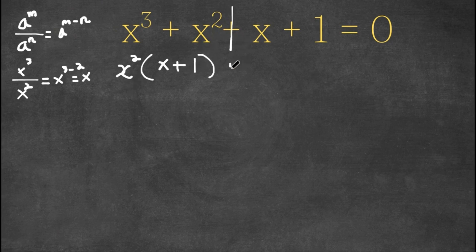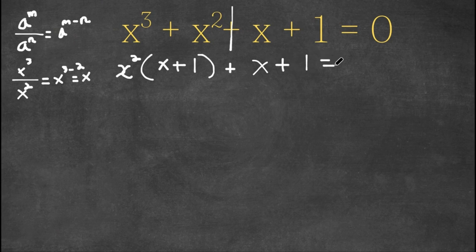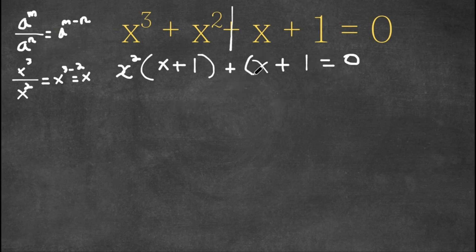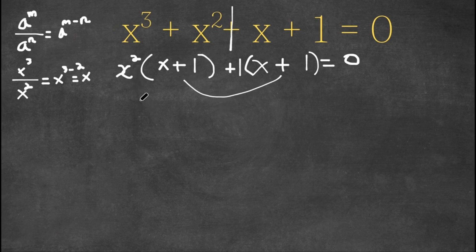And now on this side we have plus. Since we already have x plus 1 here, we don't need to do anything — this side can't be simplified. And this is equal to 0. So now this would actually give us two equations, because x plus 1, this is x plus 1 times 1. So now these two are the same — that's one equation: x plus 1 equals 0.